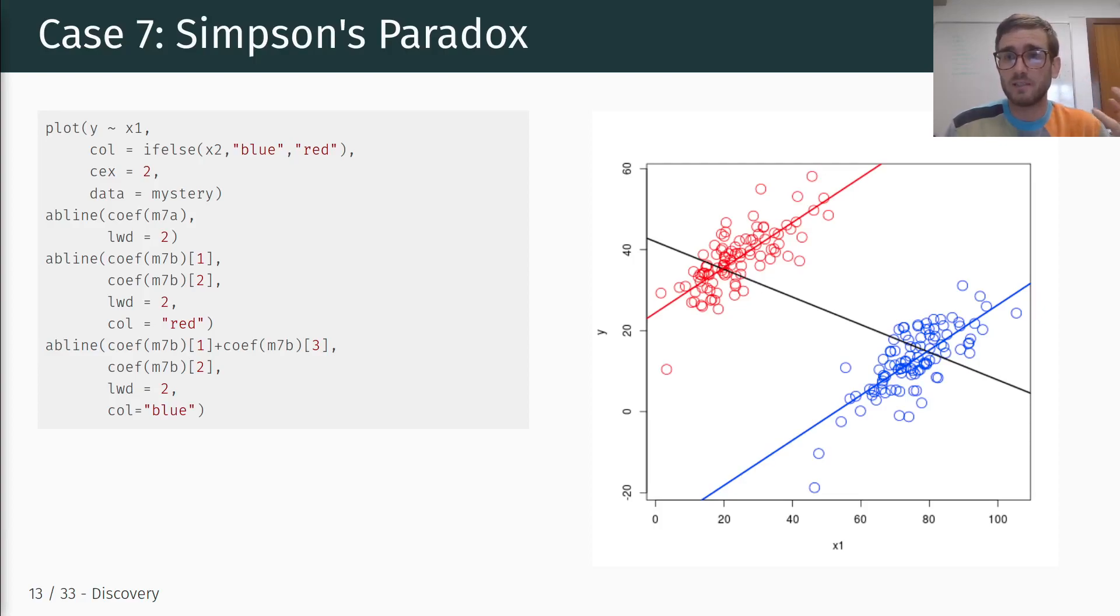where basically we have a trend that appears in several different groups of data or across groups of data, but then is reversed once we include the grouping in our model, and so this is just one example. There are a lot of different substantive examples that kind of show this type of pattern, but it's something to keep in mind if you see something where you change a model specification and all of a sudden the coefficients look different, it is probably something that kind of looks like this, where you have a different trend within the groups than across groups if you just combine them all together. And that means that the grouping variable is an important confounding factor that you have to include in your model specification in most cases.